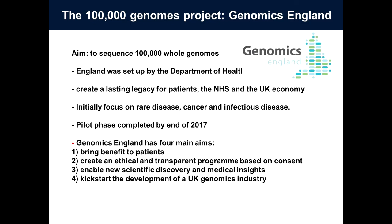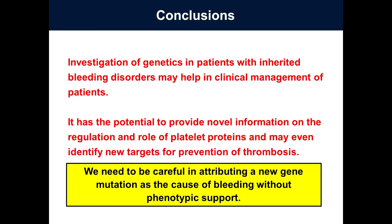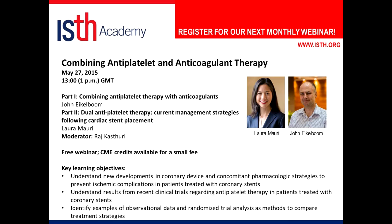To bring you up to date, a UK government initiative has been funded to sequence up to 100,000 whole genomes in patients, including rare diseases such as the inherited bleeding disorders I have described today, with the first phase already underway. In conclusion: genetic testing may help the clinical management of patients with inherited bleeding disorders; identification of genetic variants may elucidate novel protein functions and even identify novel drug targets for thrombosis prevention; and we need to be careful when assigning a particular mutation to a patient, with phenotypic support being essential as I have shown today.